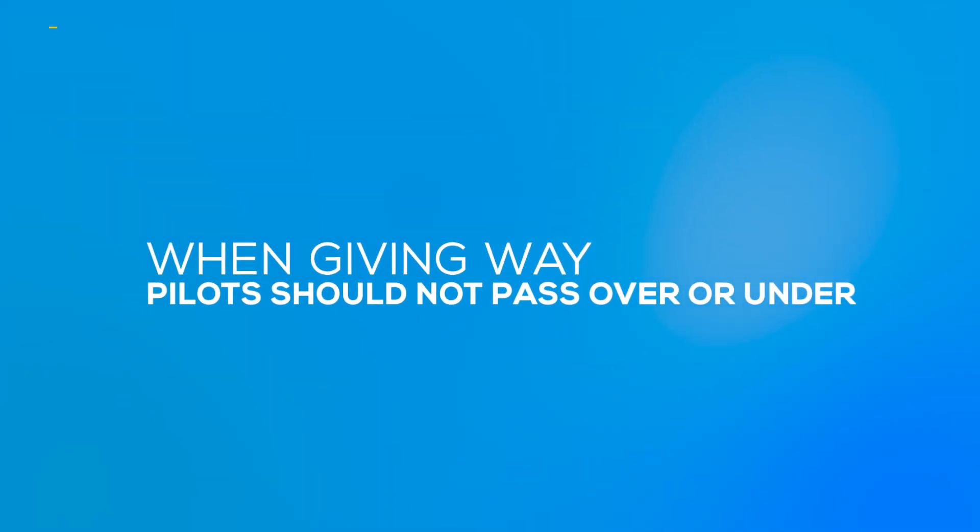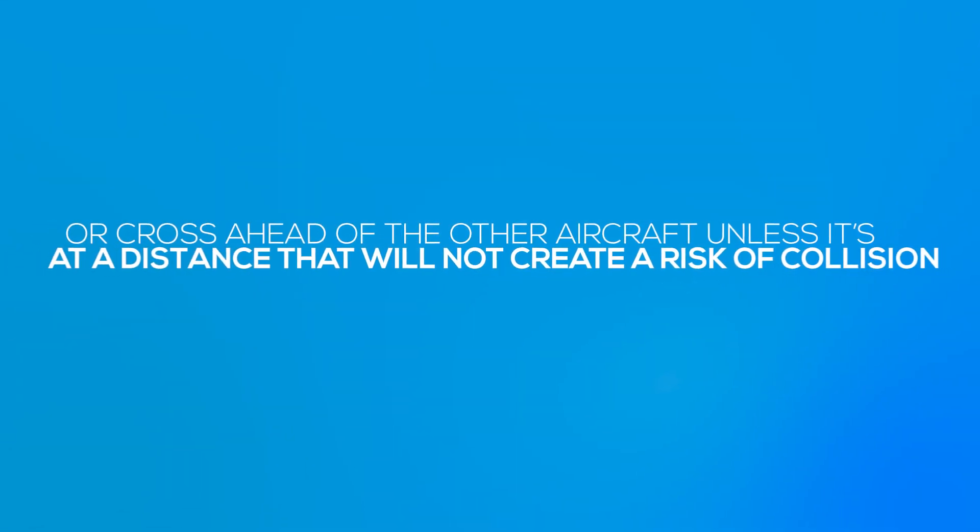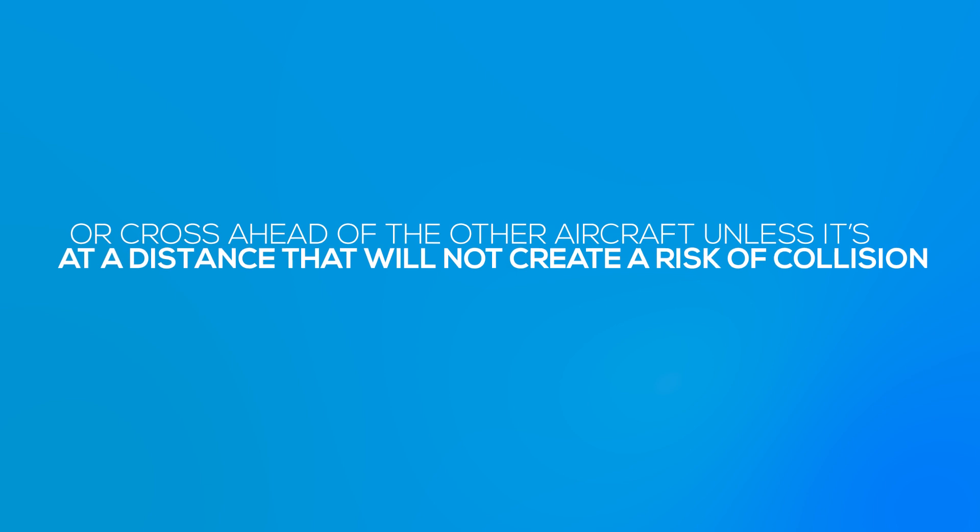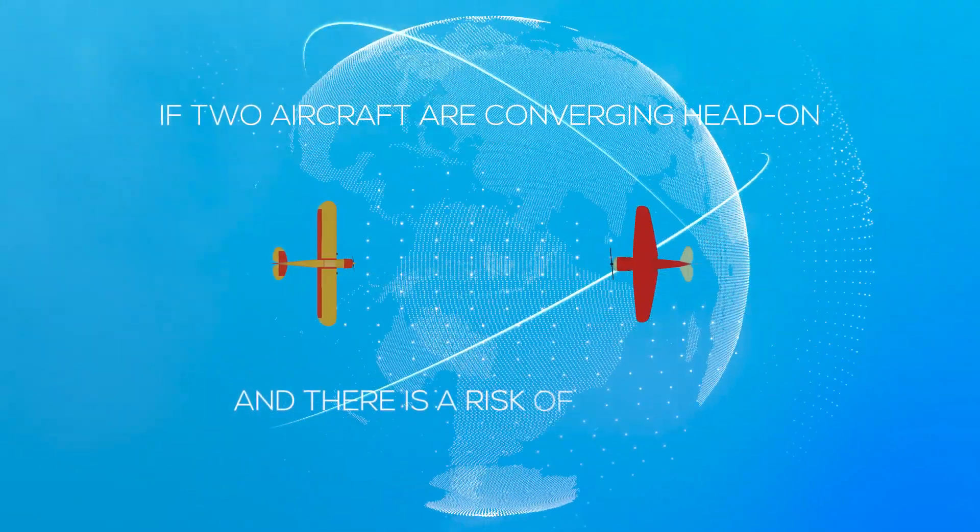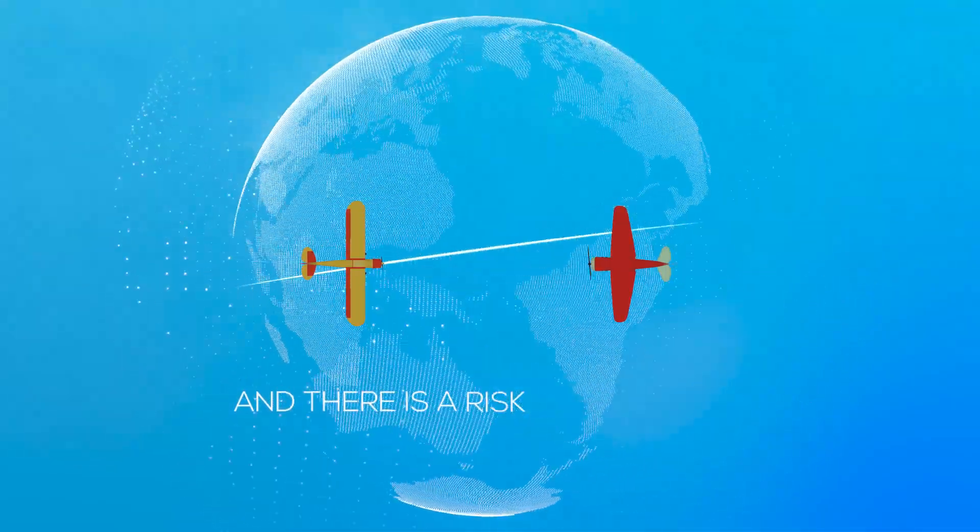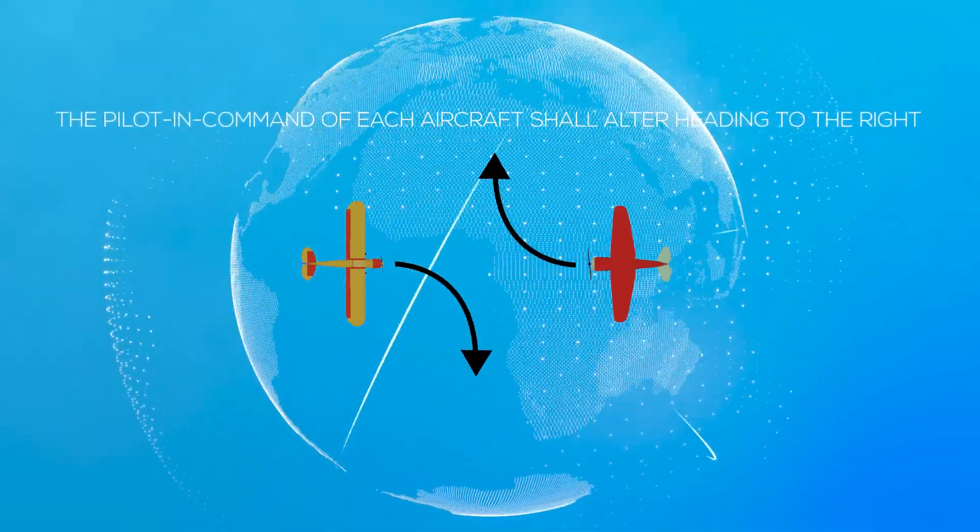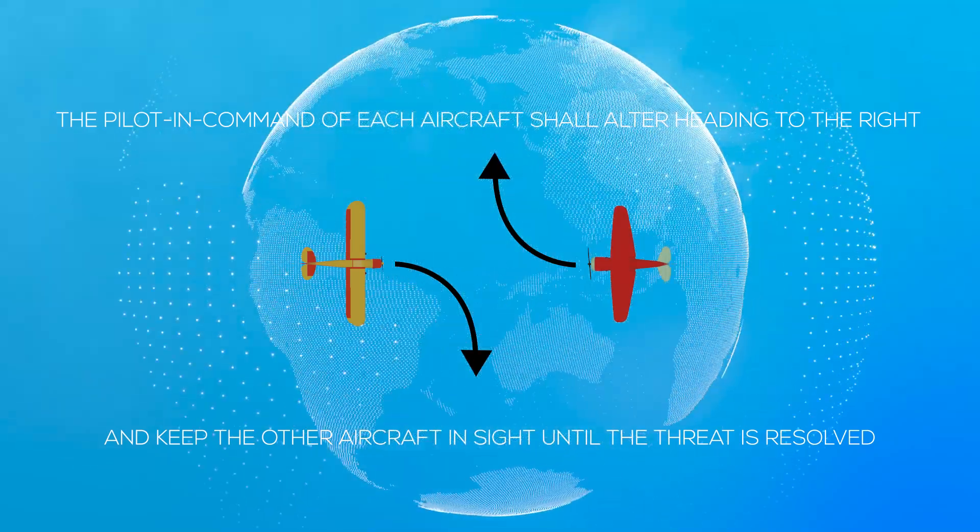When giving way, pilots should not pass over, under, or cross ahead of the other aircraft unless it's at a distance that will not create a risk of collision. If two aircraft are converging head-on and there is a risk of collision, the pilot in command of each aircraft shall alter heading to the right and keep the other aircraft in sight until the threat is resolved.